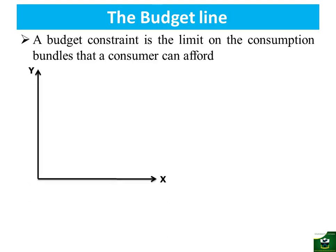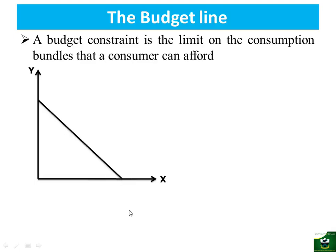On the vertical axis, we put good Y; on the horizontal, we put good X. Good Y and good X can be anything — bread and butter, shoes, clothes. We use a two-dimensional graph to avoid ambiguities in our drawings; otherwise we can have a lot of items on the budget. We'll assume two commodities so that we only have X and Y. A budget line will be a straight line which is downward sloping. The portion below this line gives us the affordable bundle, or the affordable portion of the budget line.